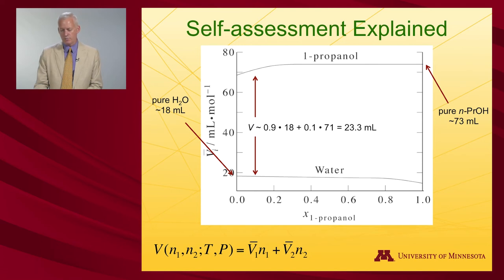I come up here to the propanol curve. I've got 0.1 moles of propanol times what looks to be about 71 if I interpret it there. And when I add that together, I'll get 23.3 milliliters.